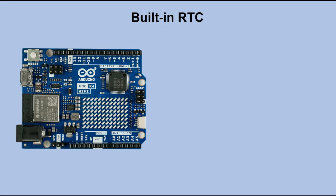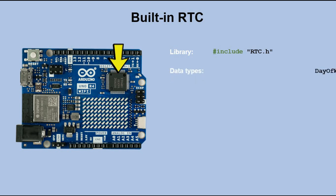Let's have a look at the Arduino R4 Wi-Fi built-in RTC module. This module is part of the RENSS core processor. We are also provided with a special RTC library that helps us retrieve current date and time. Some date and time components like hours, minutes and seconds are numbers — integers. But two have their own special types.